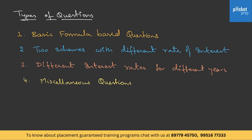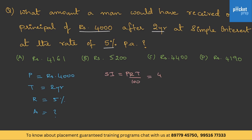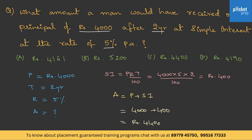Let's try out the first type — direct formula-based questions. What amount would a man receive on a principal of rupees 4000 after two years at simple interest at the rate of 5% per annum? Given: P = 4000, T = 2 years, R = 5%. We calculate SI = PRT/100 = 4000 × 5 × 2 / 100 = rupees 400.